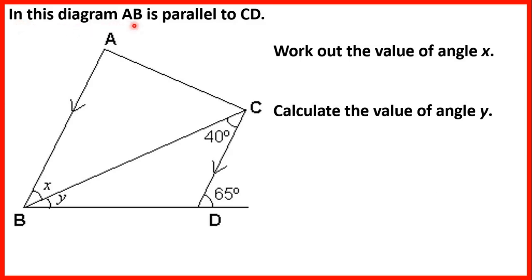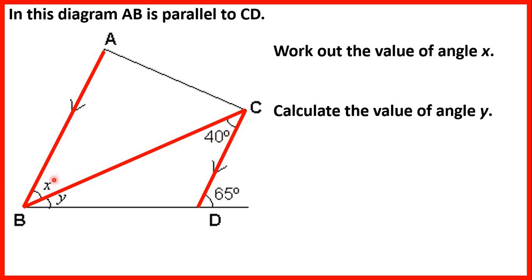In this diagram, AB is parallel to CD. We need to find the value of angle X. We can use angles on parallel lines — specifically Z angles or alternate angles — because when a line crosses parallel lines, the angles inside the Z are the same size. Since the given angle is 40 degrees, angle X must also be 40 degrees.